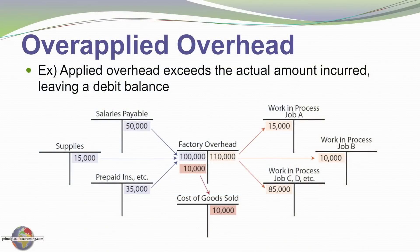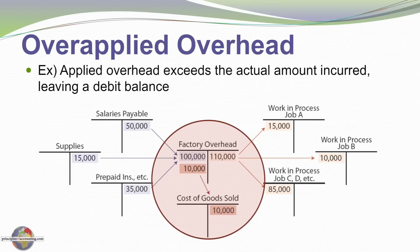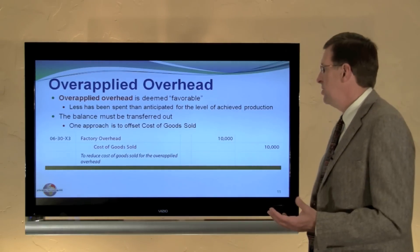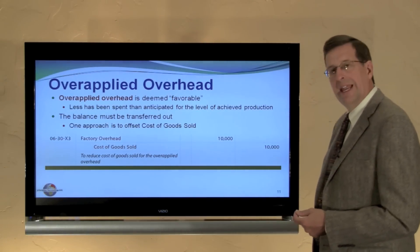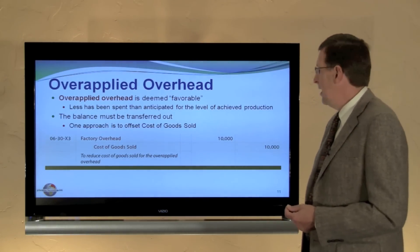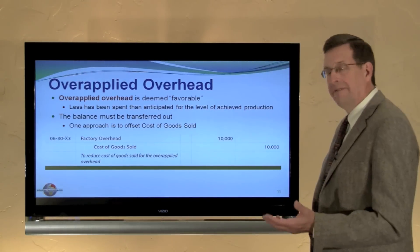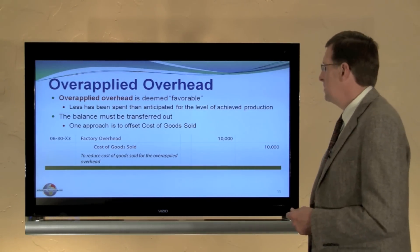Overapplied is the alternative situation. I've applied $110,000 to my various jobs but only incurred $100,000. Now I need a $10,000 debit to balance out my factory overhead account, and I'm going to credit — or reduce — cost of goods sold, since I didn't spend as much as I allocated. Overapplied overhead is a favorable situation. Less has been spent than anticipated, and the balance is transferred out of factory overhead and reduces cost of goods sold.